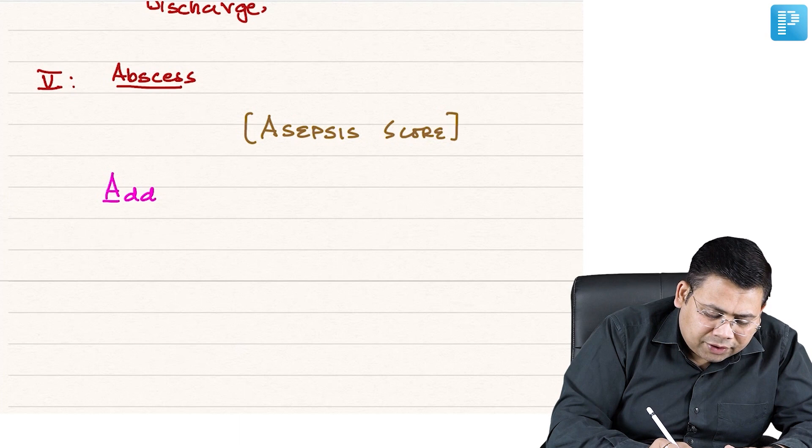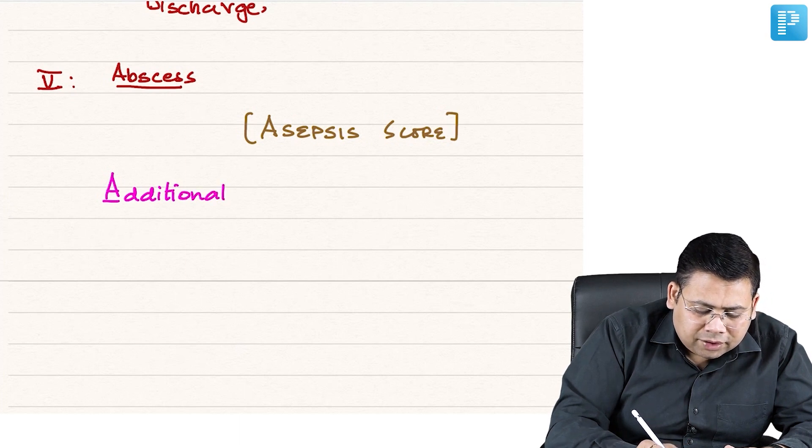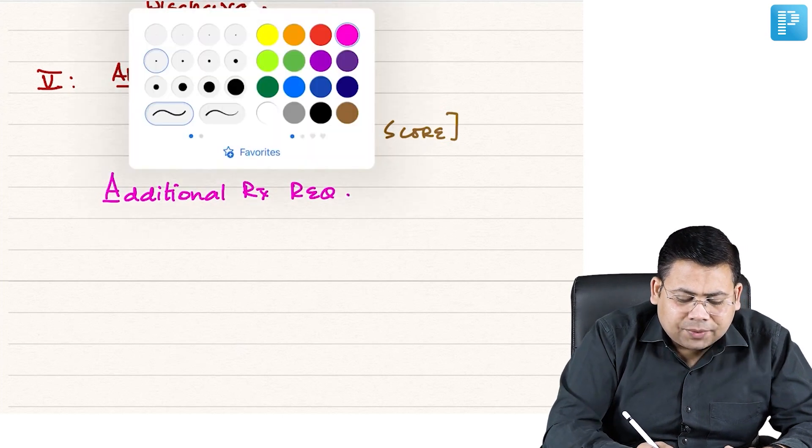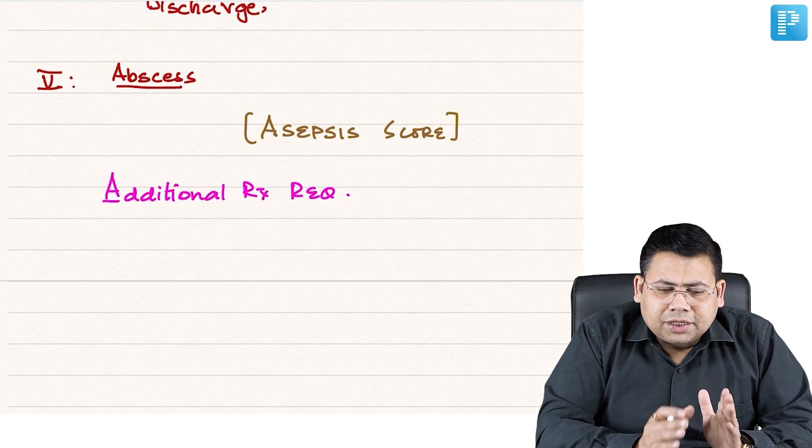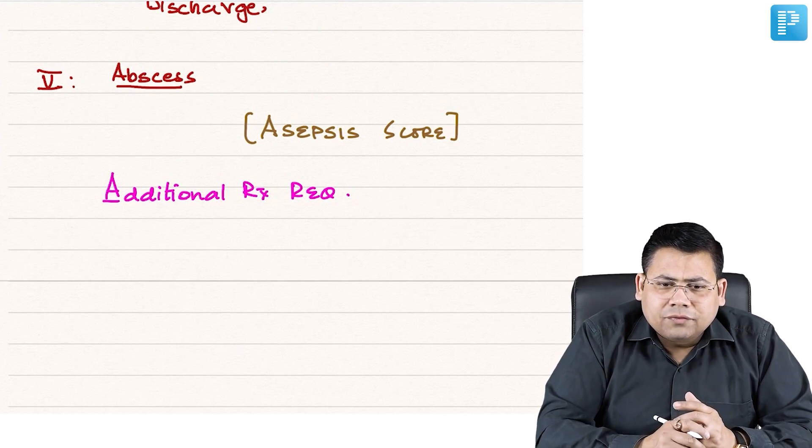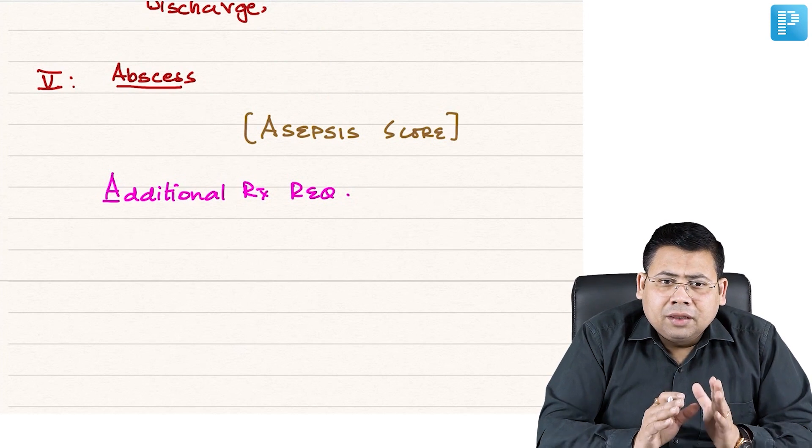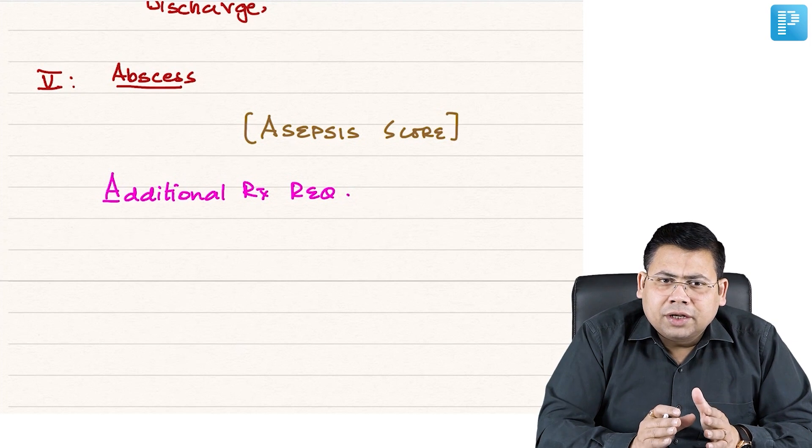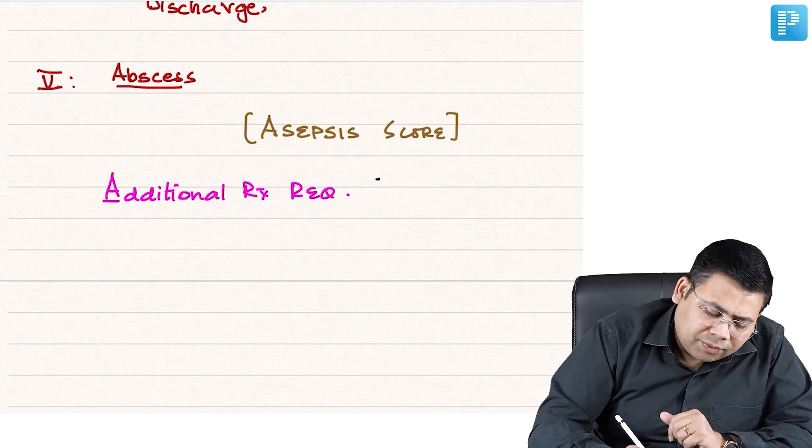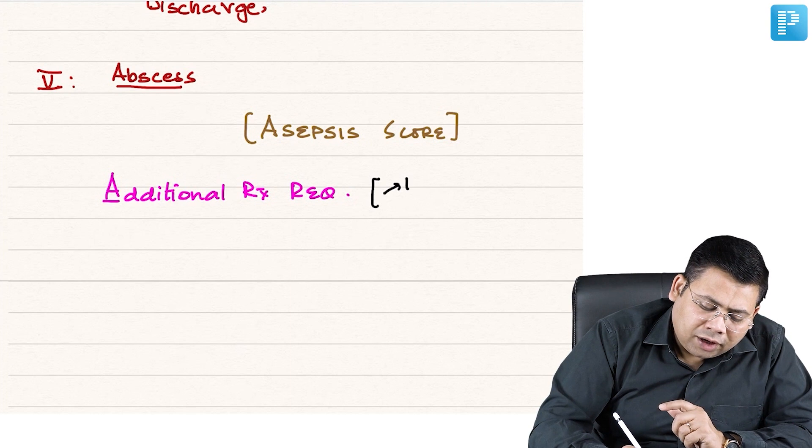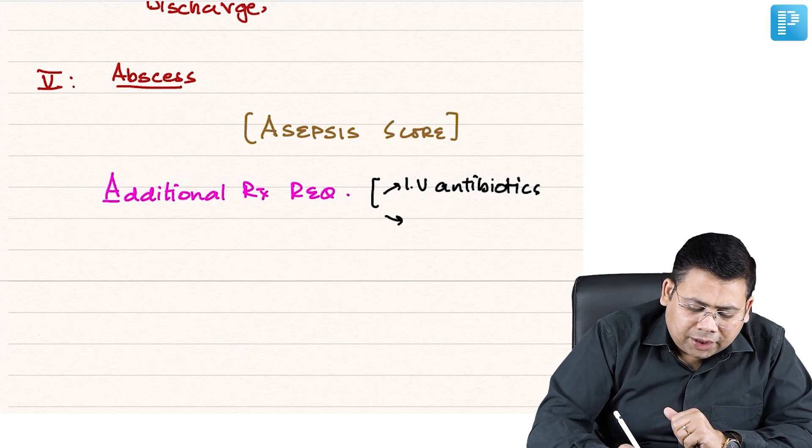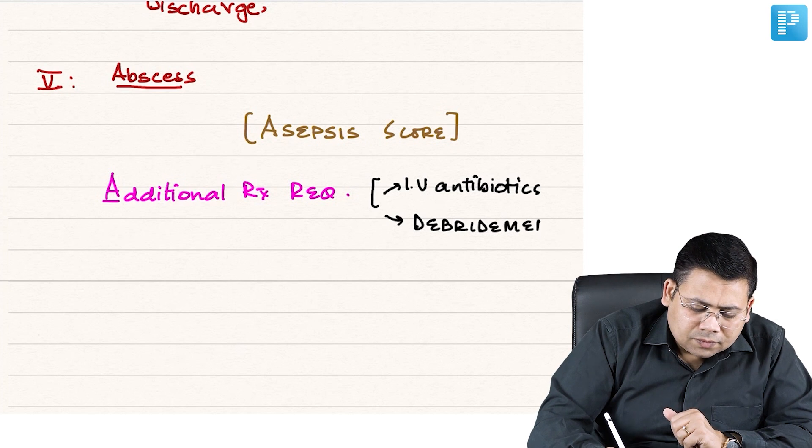A - additional treatment required. Now what do you mean by additional treatment required? Imagine a patient is admitted in the hospital and the patient has been operated. Post-surgery there was some wound infection for which the patient needed some additional treatment like longer doses of antibiotics, maybe incision and drainage, maybe debridement. So additional treatment required in form of IV antibiotics, debridement, incision and drainage.